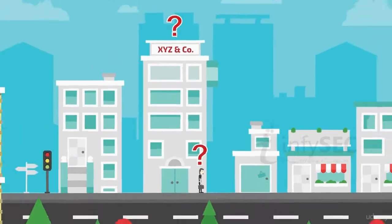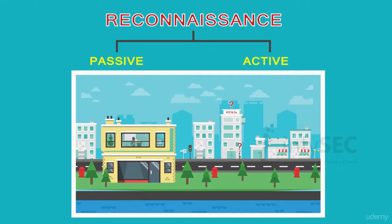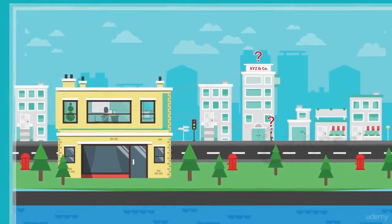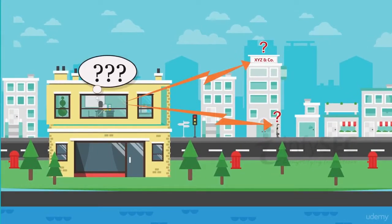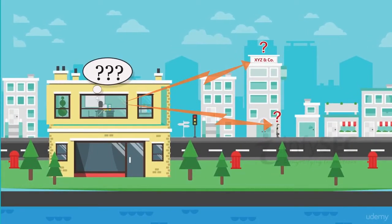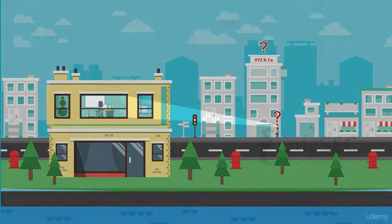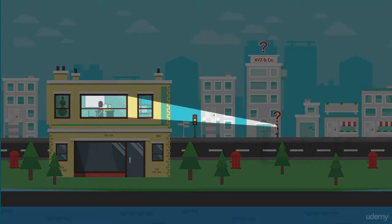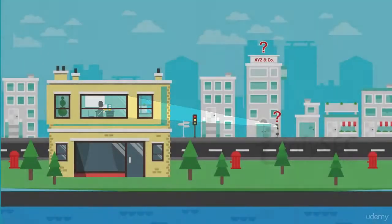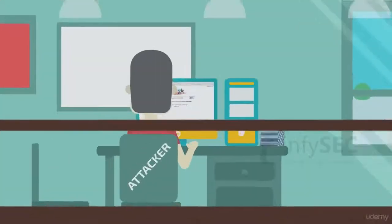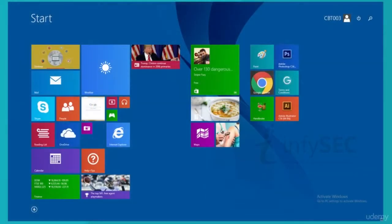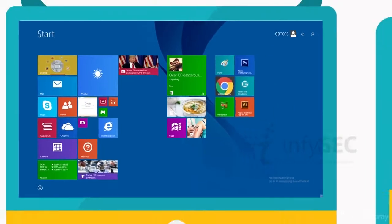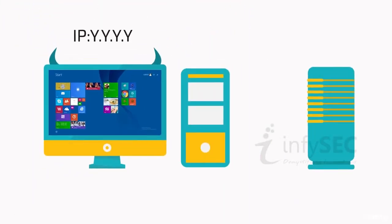Now that the target is fixed, let's probe the target for information. But what is happening? The target is able to track the attacker. What happened when the probe was initiated? Whenever a request is sent to a server,